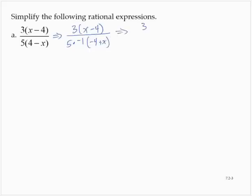And so notice that that's 3 times x minus 4 over 5 times negative 1. That's negative 5 times x minus 4. Negative 4 plus x is the same as x minus 4.